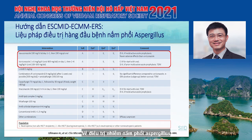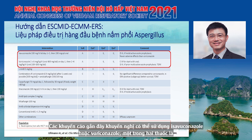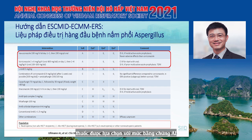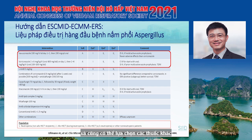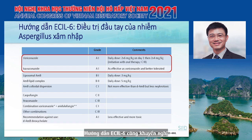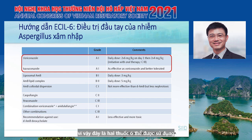Regarding treatment of pulmonary aspergillosis, recent guidelines recommend voriconazole or isavuconazole—either one can be used as the drug of choice with A1-level evidence for treatment of invasive aspergillosis. The ESCMID guidelines also recommend isavuconazole and voriconazole as first-line agents. Echinocandins and other drugs can also be used.